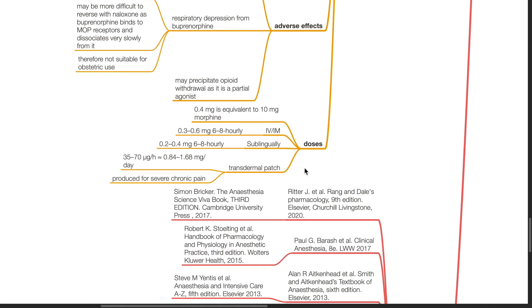Doses. 0.4mg buprenorphine is equivalent to 10mg of morphine. IV or IM dose is 0.3 to 0.6mg, 6 to 8 hourly. Sublingual dose: 0.2 to 0.4mg, 6 to 8 hourly. Transdermal patch: 35 to 70 micrograms per hour, which equates to 0.84 to 1.68mg per day.